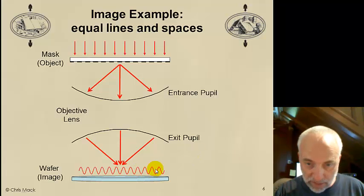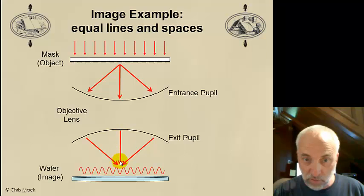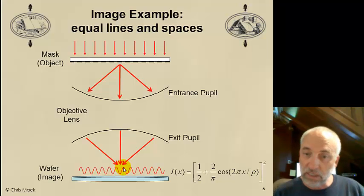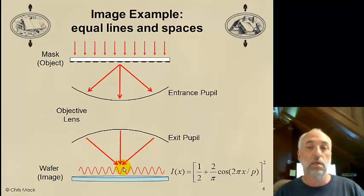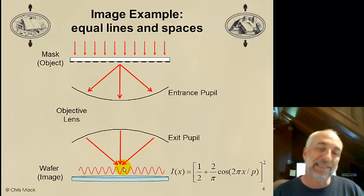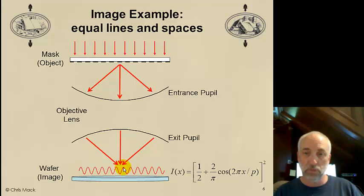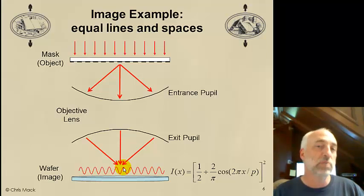These three plane waves interfering with each other resulting in a sinusoidal image. This sinusoidal image will have the same pitch, the same period as the original mask pattern, and wherever I had a dark pattern on the mask, I'll get a dark region on the wafer. The intensity on the wafer will be this electric field quantity squared. So we just derived the electric field was one-half plus two over pi times cosine of two pi x over p. Now I take that quantity and square it.